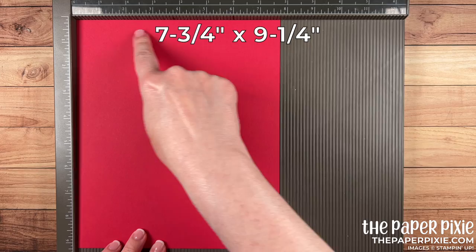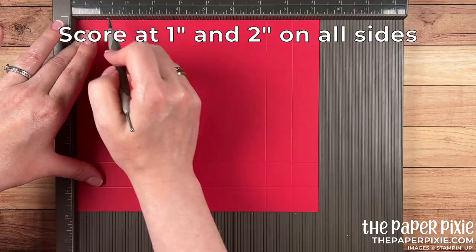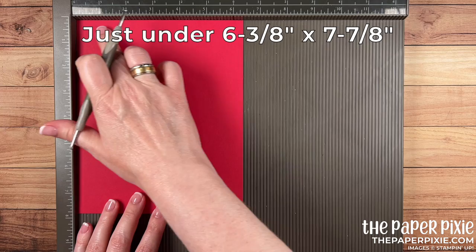All right for the box base we're using real red cardstock that measures 7 3/4 by 9 1/4 and we're just going to score this at 1 inch and 2 inches on all four sides like so.